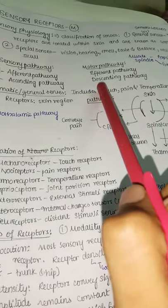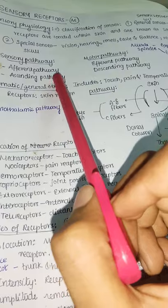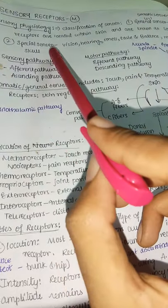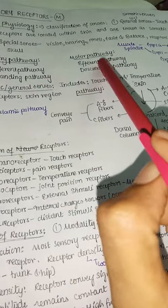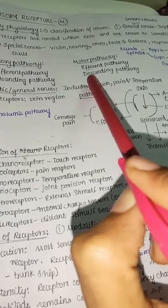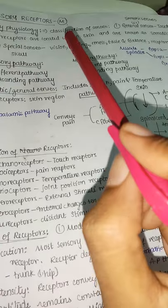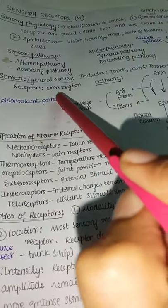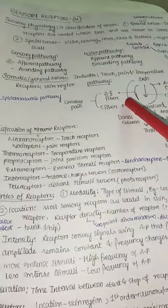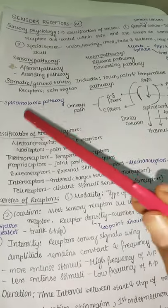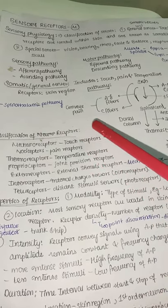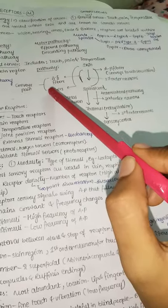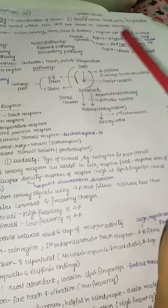The sensory pathway is an afferent and ascending pathway — signals go from spinal cord to brain. The motor pathway is efferent and descending — from cortex to spinal cord. General senses (touch, pain, temperature) travel via the spinothalamic pathway. From the skin, sensations travel via A-beta fibers (touch) or A-delta and C fibers (pain) to the spinal cord.